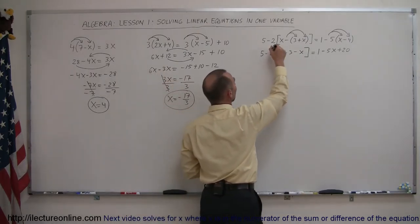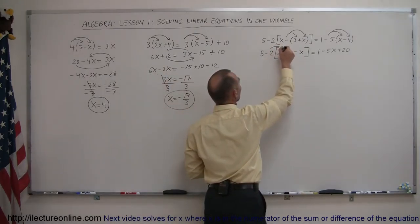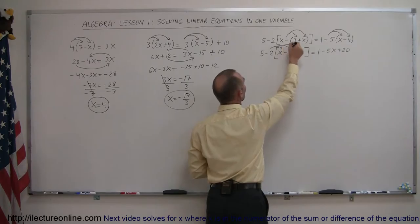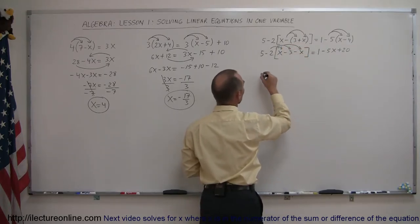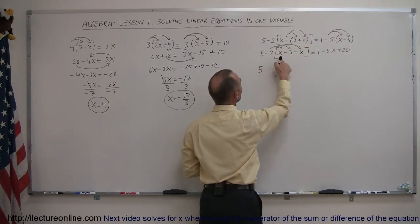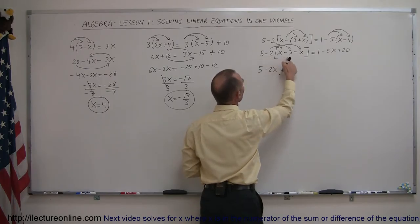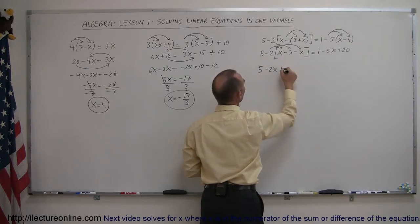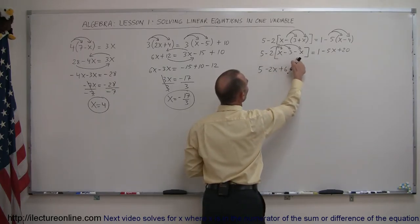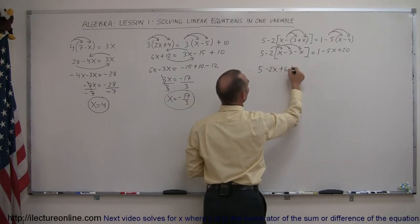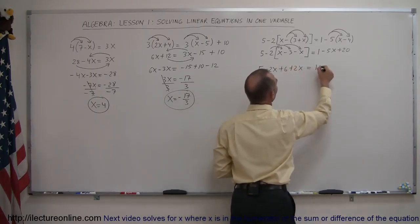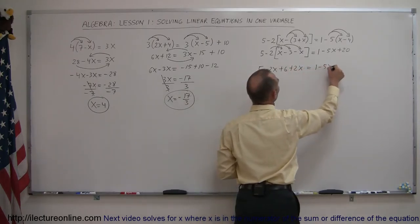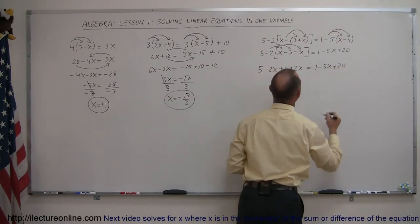In this case, the negative 2 is going to be distributed to the x, to the negative 3, and to the negative x. So 5 minus 2 times x is minus 2x, minus 2 times minus 3 is plus 6, minus 2 times minus x is plus 2x, equals 1 minus 5x plus 20.